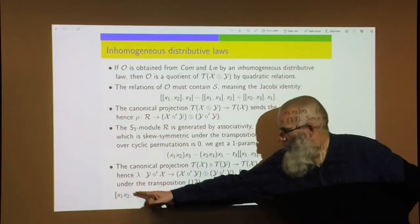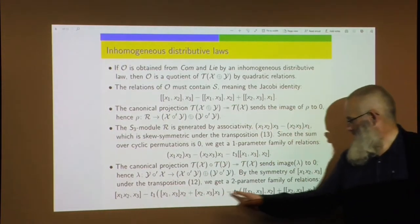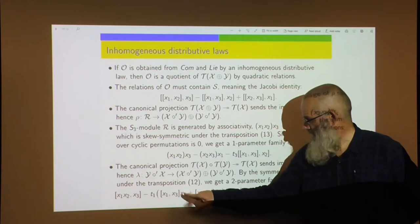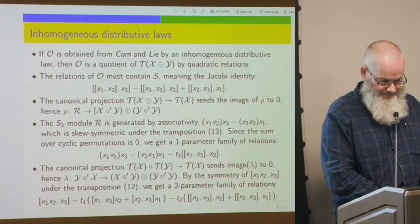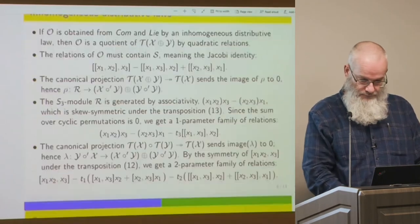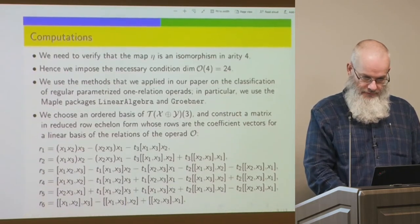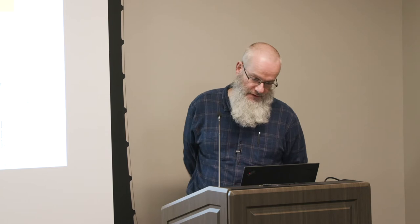The map eta from the theoretical part must be an isomorphism to get an inhomogeneous distributive law, and it suffices to check this in arity 4. For that to be true, it's necessary that the S_4 module in arity 4 of this composed operad has dimension 24 — in fact, we need it to be isomorphic to the regular representation of S_4. This is where we get into actual computing.